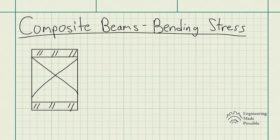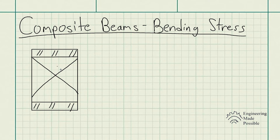These double-dashed lines at the top and bottom signify a certain material being used. In this case, let's assume the top and bottom portions of this beam are steel. However, bonded in between the steel is this middle piece — whose material is going to be wood. By definition, this is a composite beam: a beam composed of multiple different materials. The main reason you design such things is to make a beam a lot more efficient.